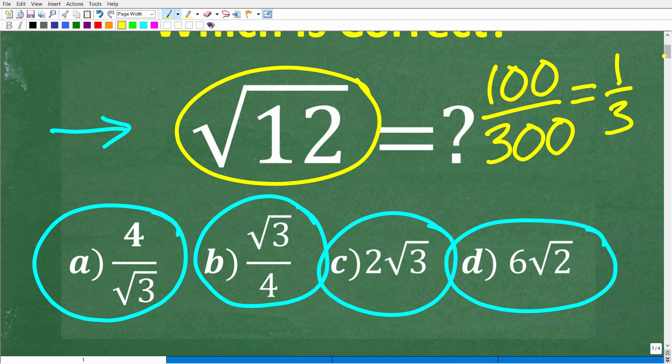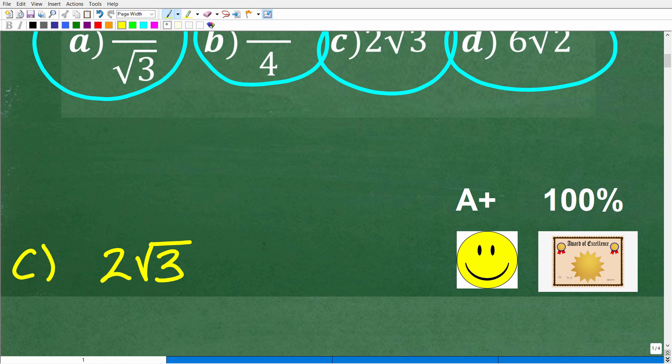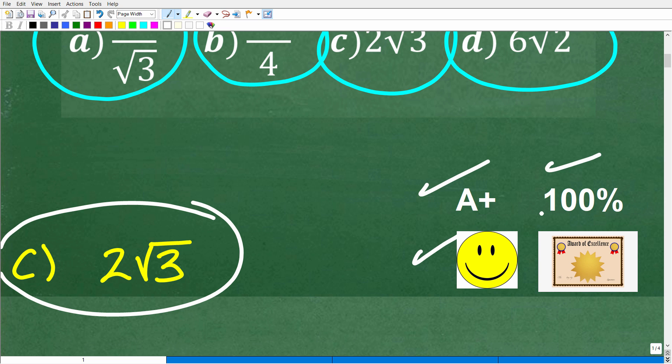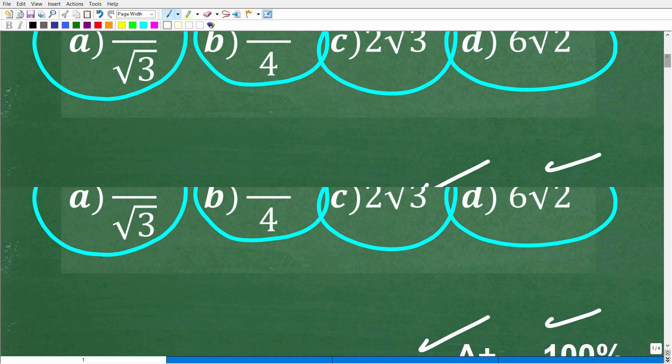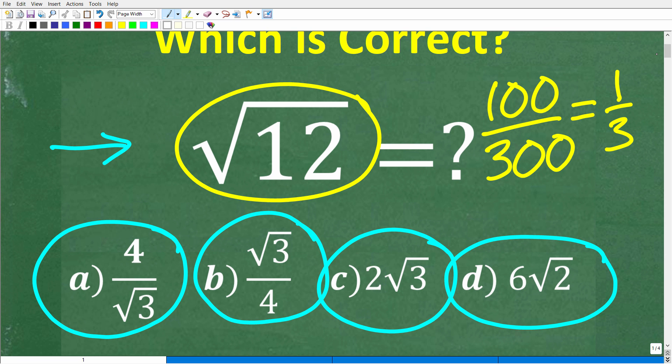All right, so let's take a look at the right answer. The square root of 12 is equal to what? Well, it's equal to C, two times the square root of three. Now, if you got this right, you'd definitely get a happy face and A plus and 100% any certificate of excellence because you appeared to know a thing or two about simplifying square roots, which means you know about properties of square roots and something called perfect square factors.